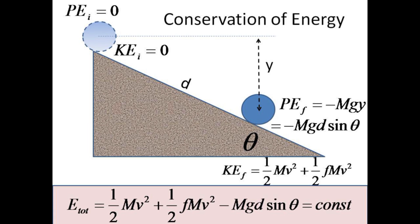The kinetic energy at any point is the combination of translation plus rotation. The potential energy may be related to its position d along the incline. Potential energy will be minus mgy, but y is just d sine theta.